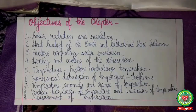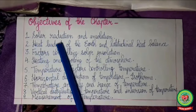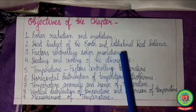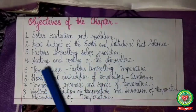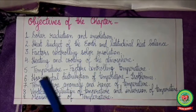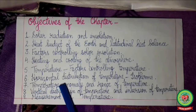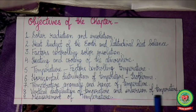With this we complete today's topic. Let us review the objectives we have discussed in this chapter: number 1, solar radiation and insolation; number 2, heat budget of the Earth and latitudinal heat balance; number 3, factors controlling solar insolation; number 4, heating and cooling of the atmosphere; number 5, temperature and factors controlling temperature; number 6, horizontal distribution of temperature, isotherms, and temperature anomaly; and range of temperature, vertical distribution of temperature, inversion of temperature, and measurement of temperature.